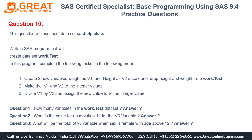The third step is to divide v1 by v2 and assign the result to a new variable v3, also as an integer value. Now the three questions are: how many variables are in the dataset work.test? What is the value for observation number 12 for the v3 variable? And what will be the total of v3 when sex is female and age is above 12? We need to answer these three questions according to our tasks.